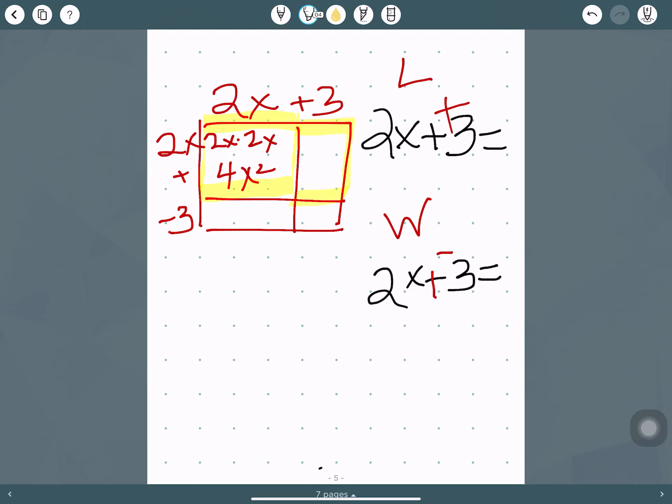This one, since this is 2x over here, it's going to be 2x times 3. 2 times 3 is 6, and then x. This length is 2x, because directly above it's 2x, the opposite side. So 2x times negative 3 is negative 6x.